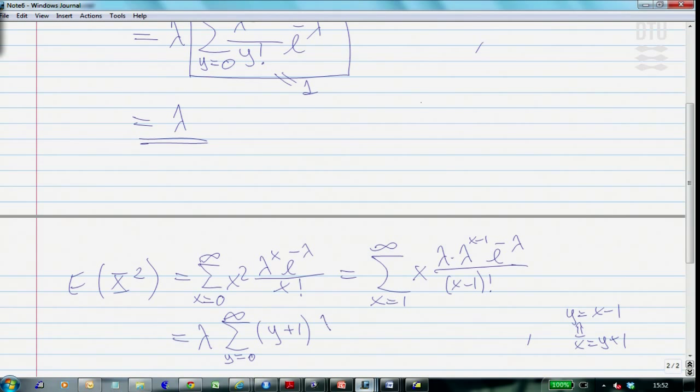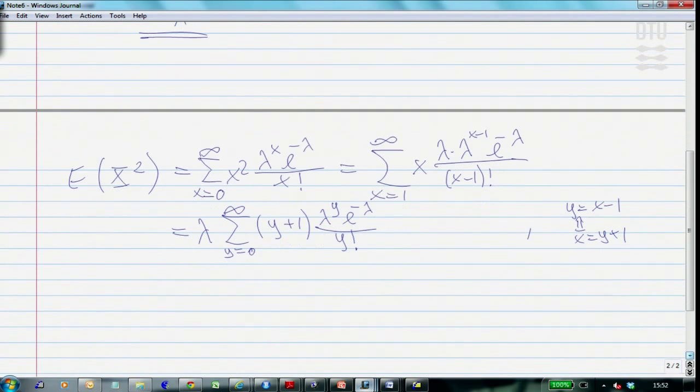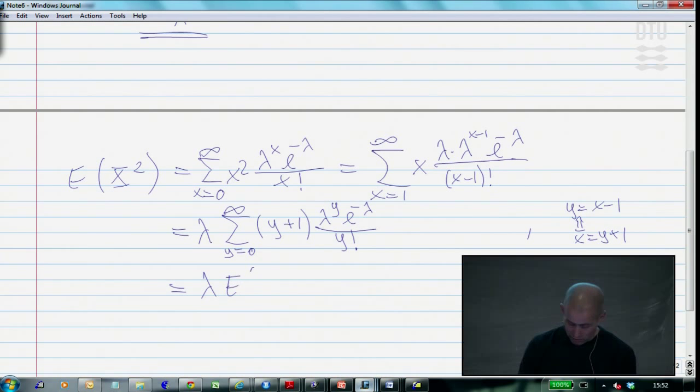So I should put in y plus 1 here, and then lambda to y, e to minus lambda, divided by y factorial. And we recognize, same trick as when we did the variance for the binomial, if you want to see that one. We recognize that we are having the mean of, you could say, the mean of a binomial y plus 1, sorry, Poisson y plus 1. Because here we have all the Poisson probabilities. We have y is Poisson.